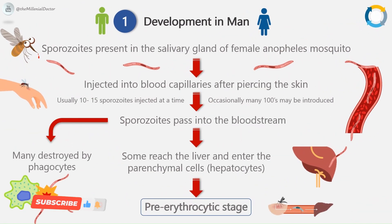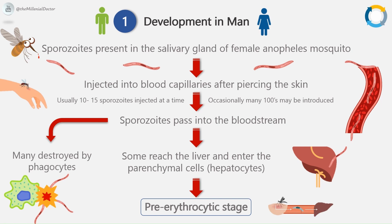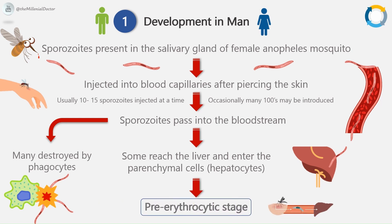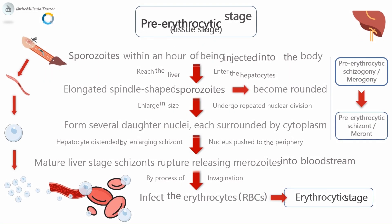The first development in man is called the human cycle. Human infection comes through the bite of the infective female Anopheles mosquito. The sporozoites, which are the infective forms of the parasite, are present in the salivary gland of the mosquito. They are injected into blood capillaries when the mosquito feeds on blood after piercing the skin. Usually 10 to 15 sporozoites are injected at a time, but occasionally many hundreds may be introduced. The sporozoites pass into the bloodstream, where many are destroyed by phagocytes, but some reach the liver and enter the parenchymal cells, the hepatocytes. This begins the pre-erythrocytic stage.